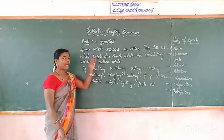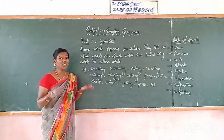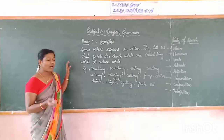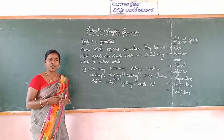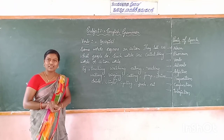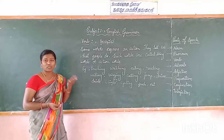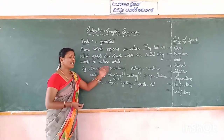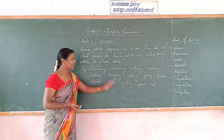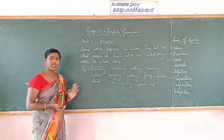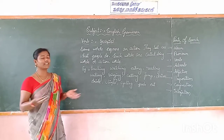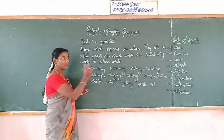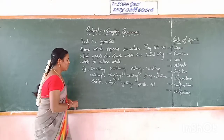Verb means it expresses an action — that is what people do. Such words are called doing words or action words. I am teaching. You are walking, listening, speaking, watching a movie, calling, singing, writing, reading, jumping, eating, cycling, climbing, drinking, pushing, dragging. These are all examples for the verb. What I am doing, what people are doing — that word is called a verb.